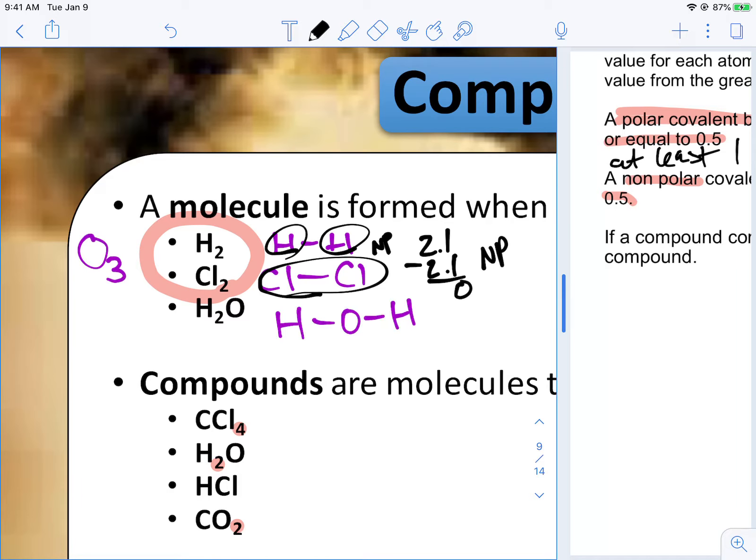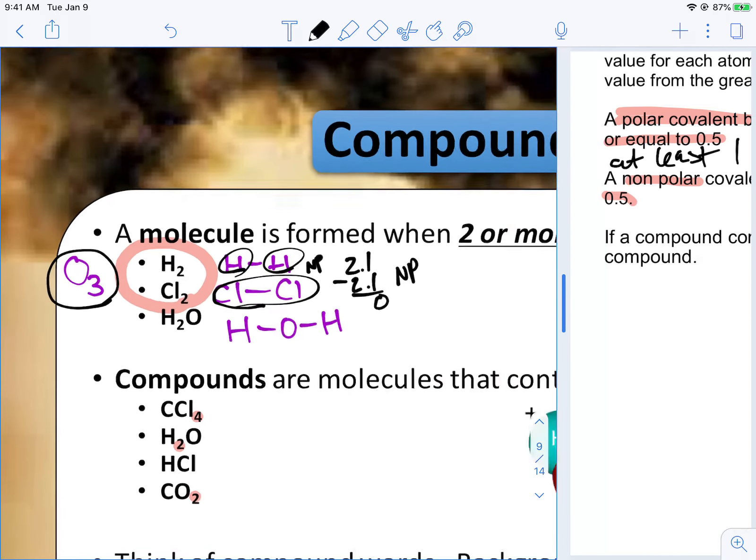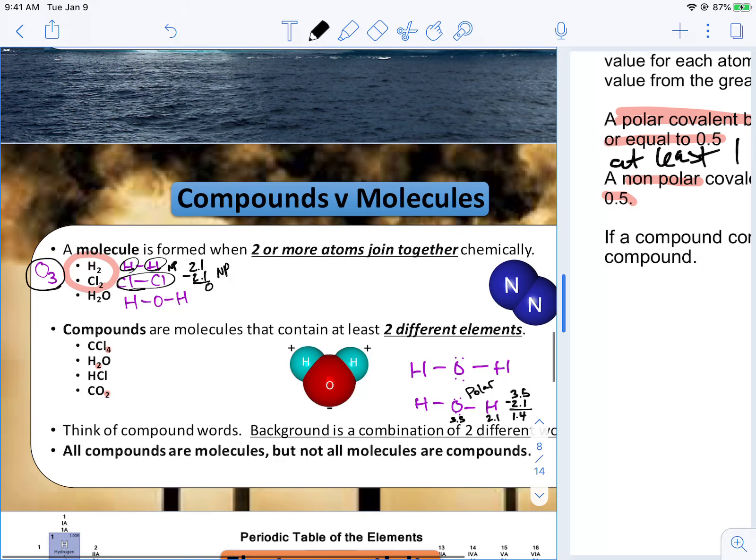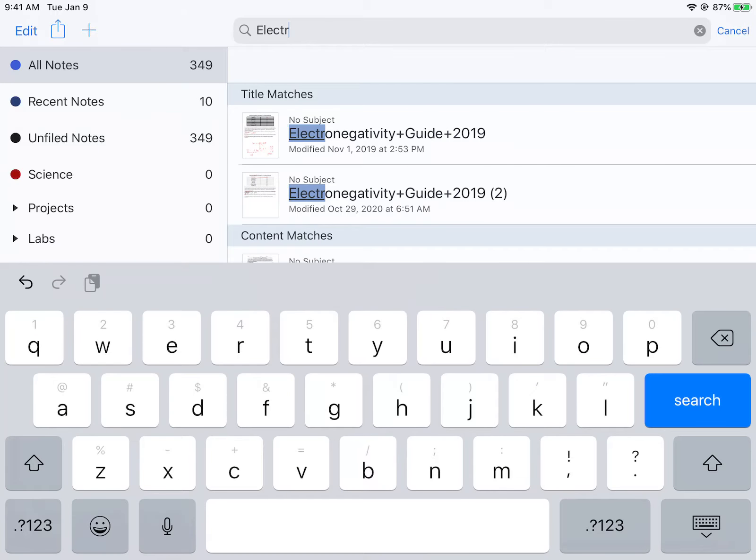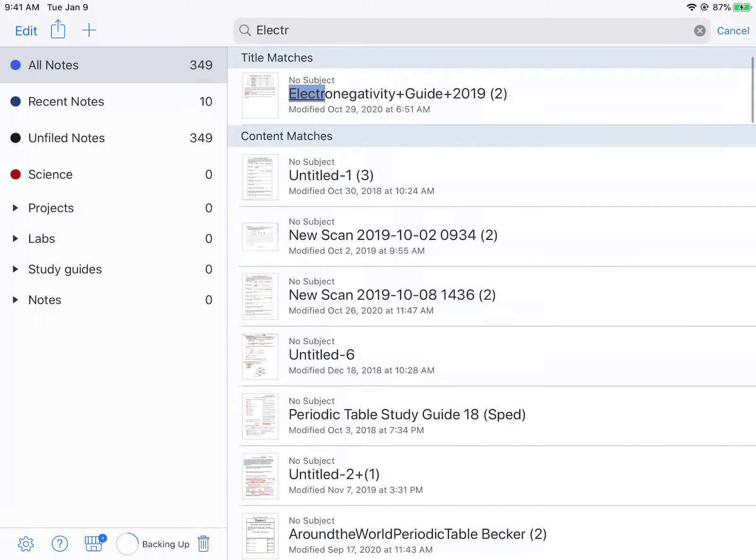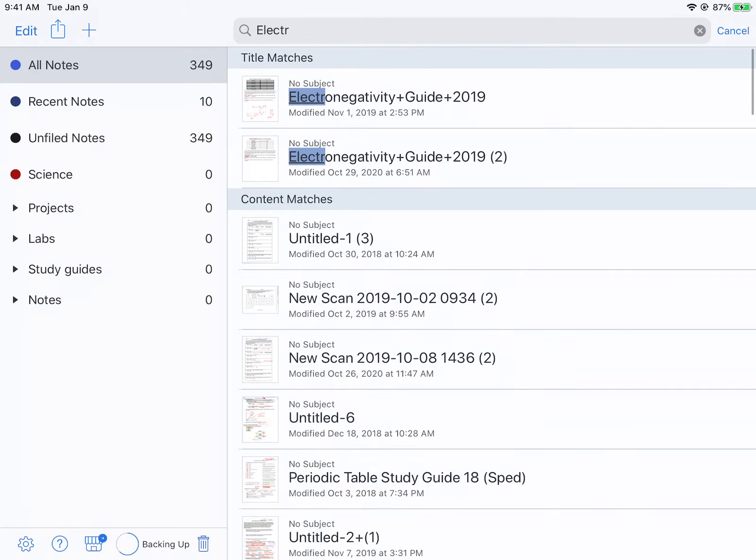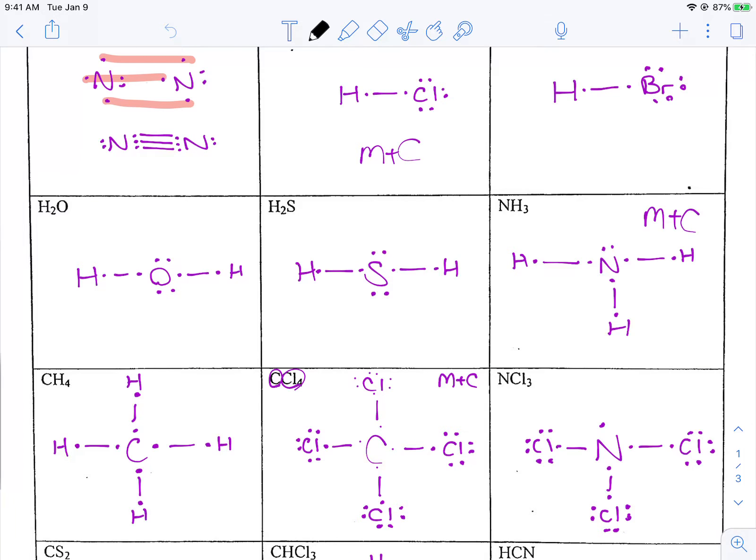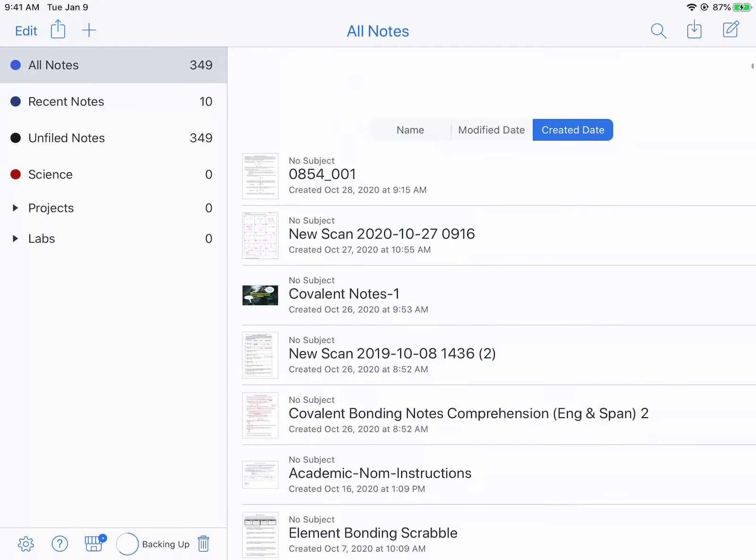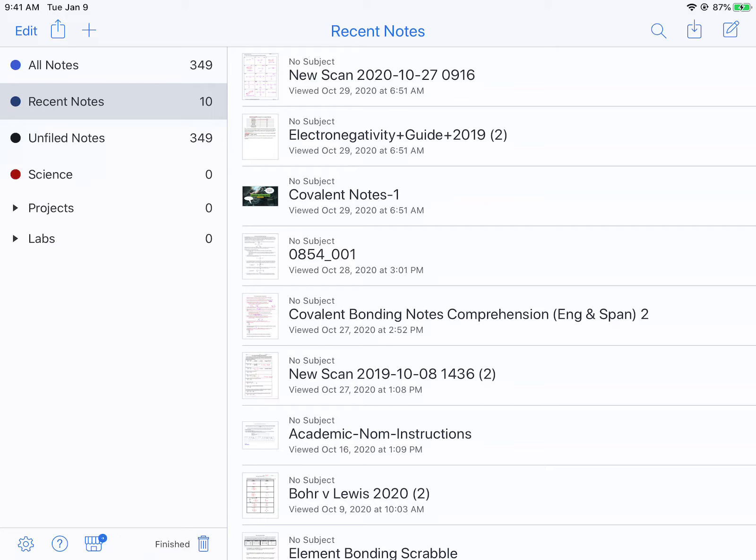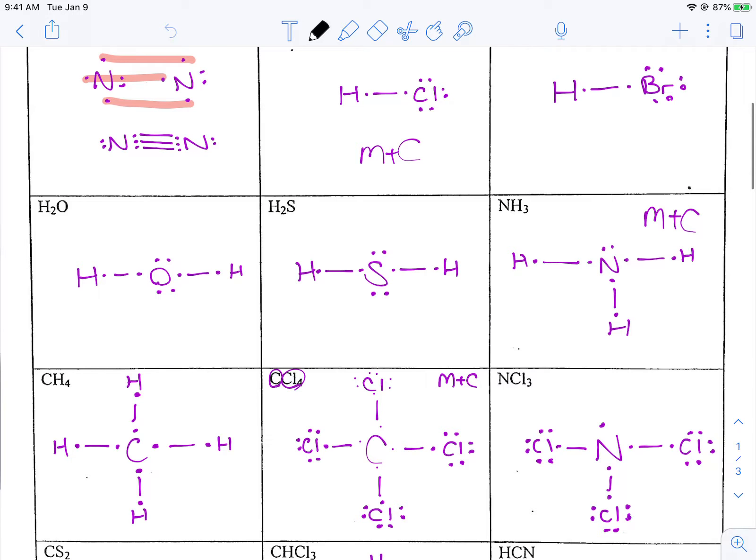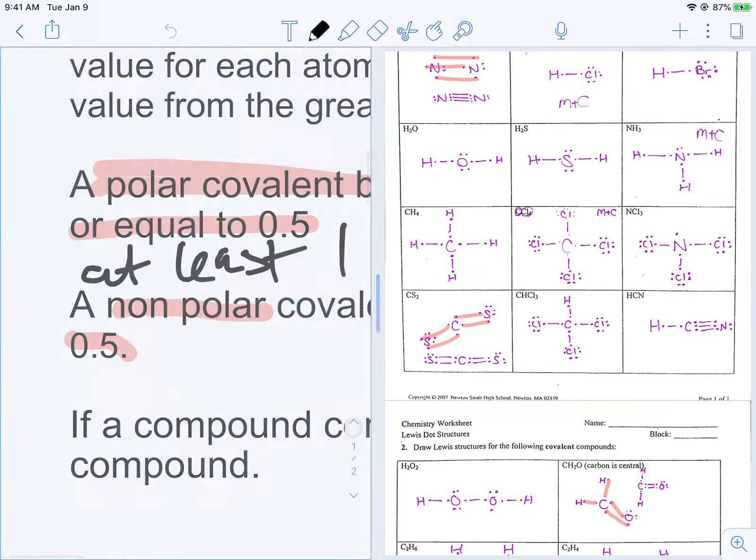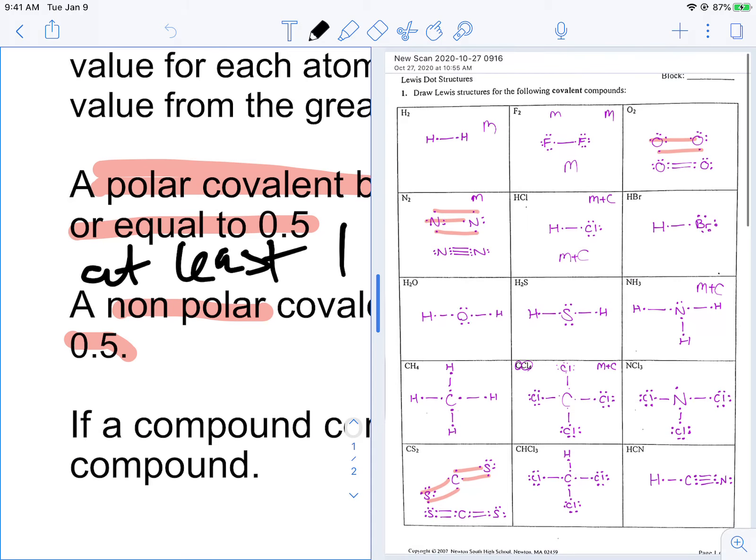Now, O3, on the other hand, which is ozone, that's a polar compound, but we'll get to that later. So let's do a couple practice problems to make sure we're off on the right foot. So if we go back to the bonds that we did, I am going to pull up four bonding problems from yesterday. And then I'm going to go ahead and get the electronegativity guide up.